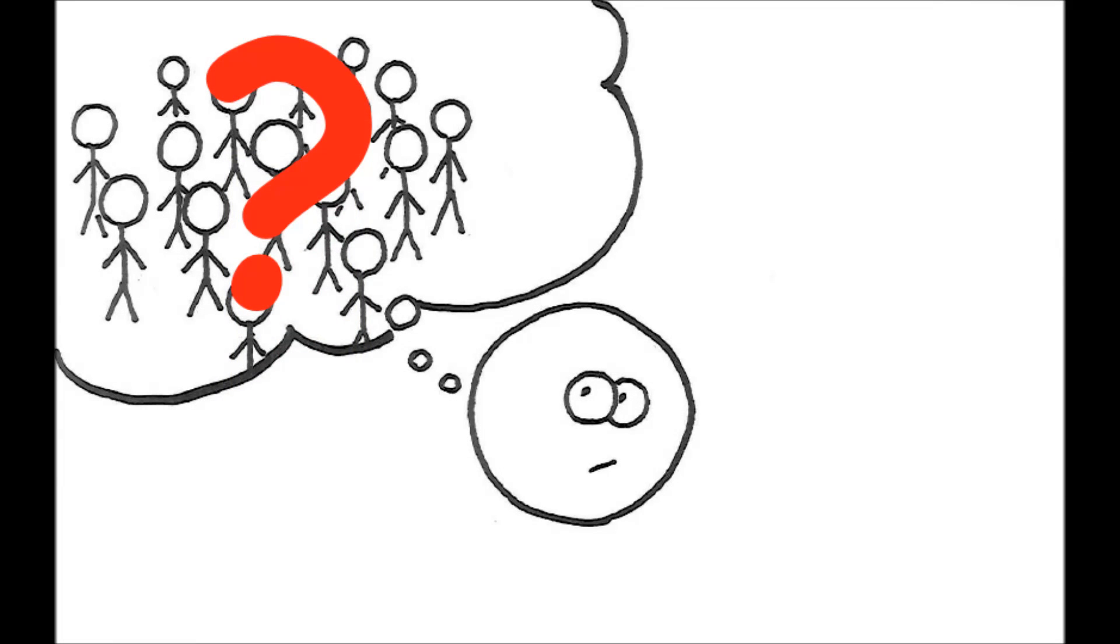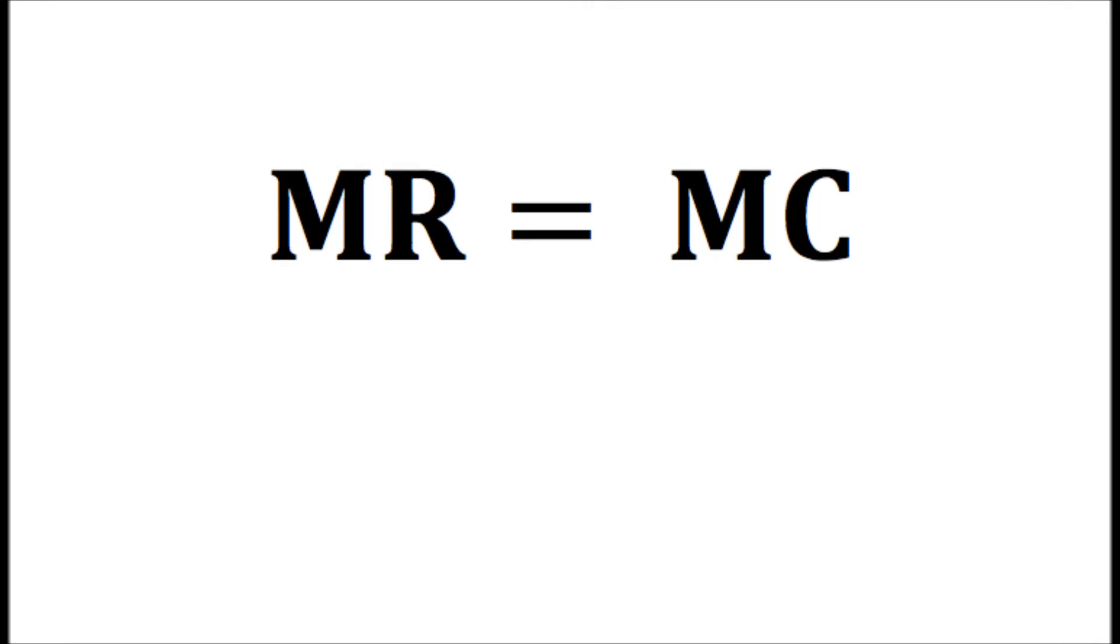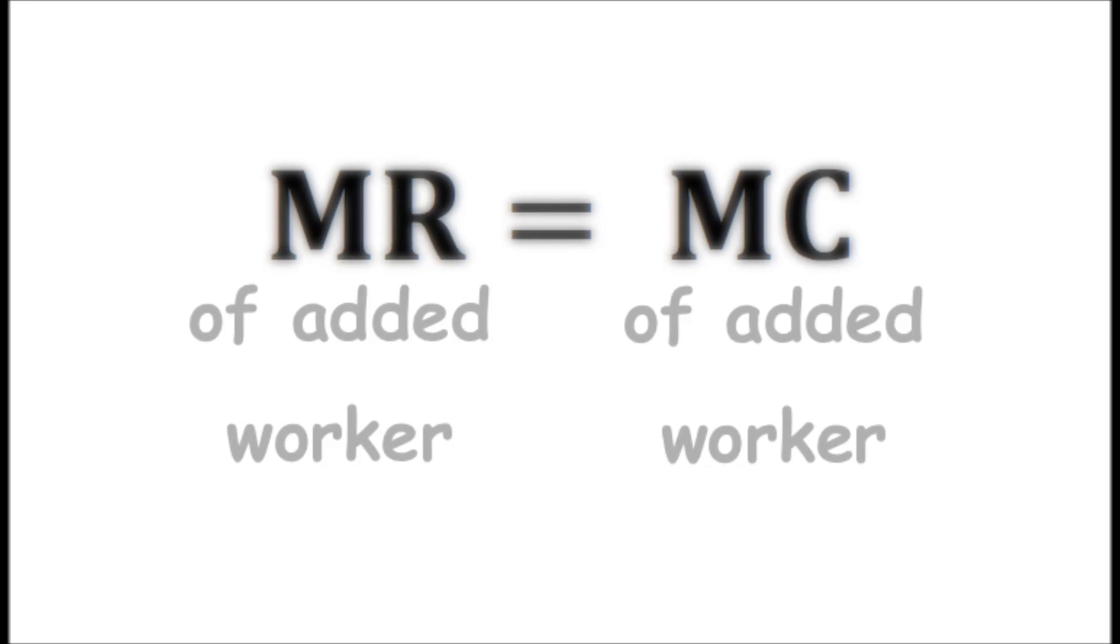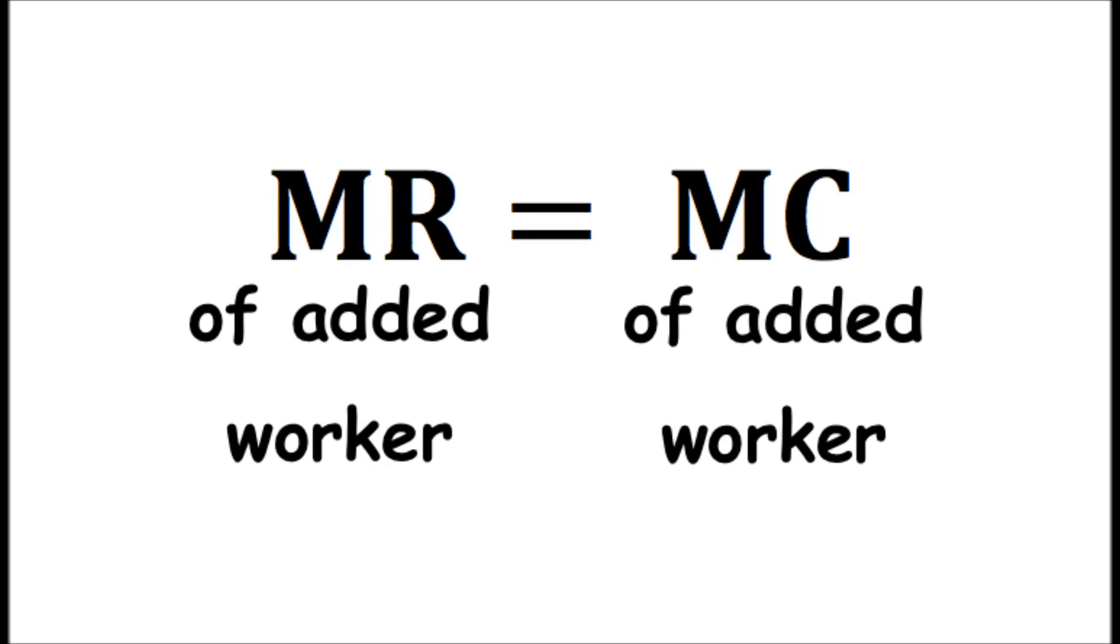But I digress somewhat. The original question was, how many workers will the firm hire? How will this firm, which must take the price of labor, that is the wage, as given, decide on how many workers to hire? Effectively, we just go right back to our old marginal revenue equals marginal cost profit maximizing rule, except that it's the added revenue and added cost of hiring another worker. The rule for hiring is that the firm hires workers up to the point where the additional cost of hiring the last worker is equal to the additional revenue generated by hiring that worker.